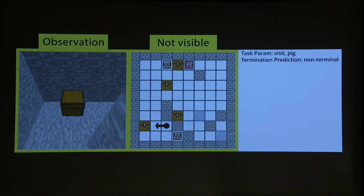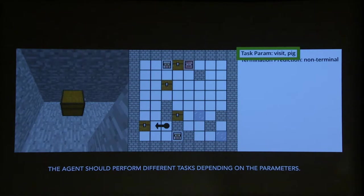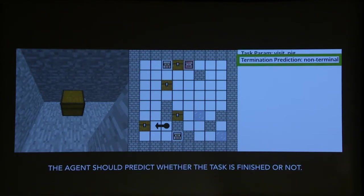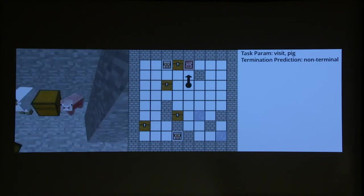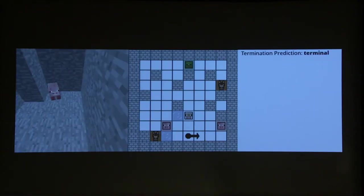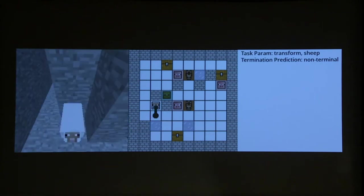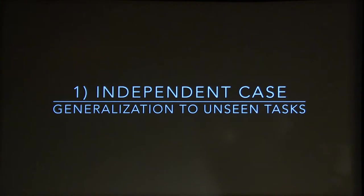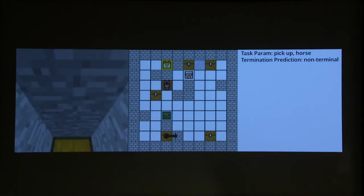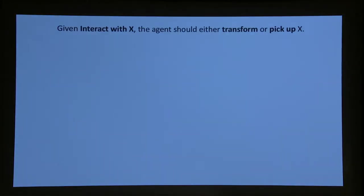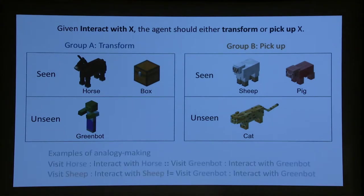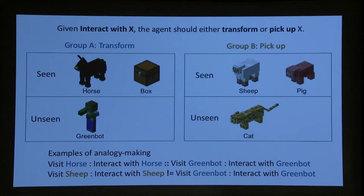We built a domain in Minecraft. The agent gets a first-person view; the map shown is how we generate each instance but is not visible to the agent. For example, the task might be 'pick up cat' — it has to find the cat and pick it up — or 'transform sheep' — find the sheep and pick it up, then signal task completion. In the independent case, generalization to unseen tasks like 'transform pig' or 'pick up horse' is relatively easy. In the object-dependent case, we use analogy making with groups of objects where the interaction is the same — 'visit horse' to 'interact with horse' is the same as 'visit green bot' to 'interact with green bot' since they're in the same category.